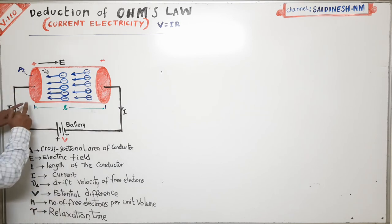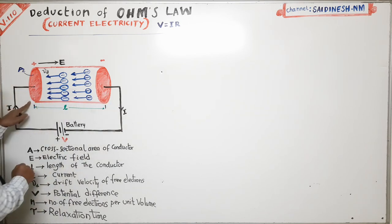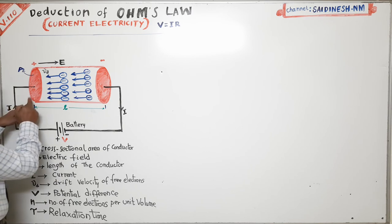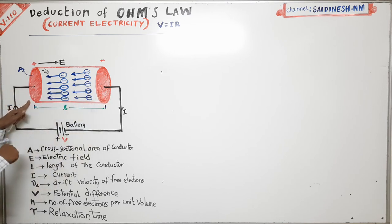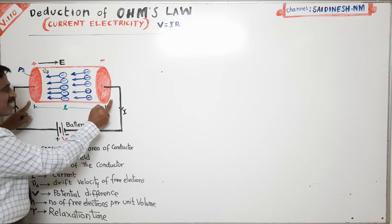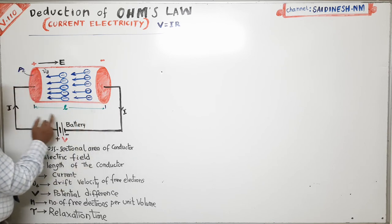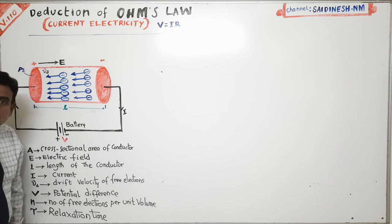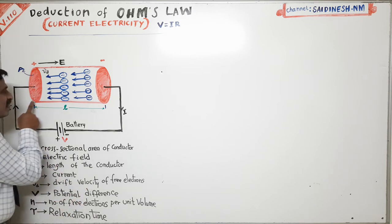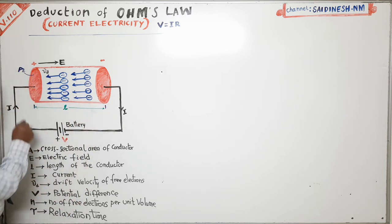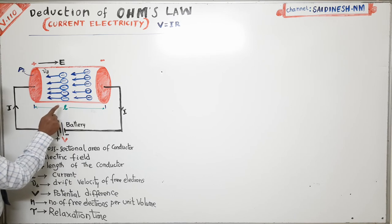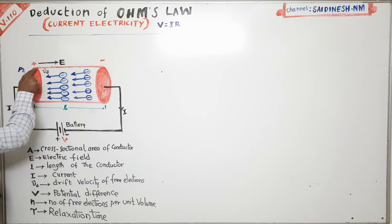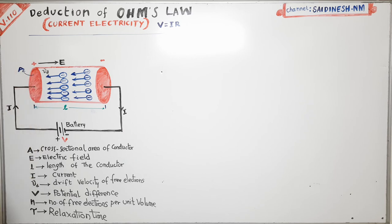Let us consider a metallic wire — a copper wire or a gold wire. Let us consider a conductor of length L. The length of the wire may be 1 meter or 2 meters; I am taking the length of the conductor as L. This is the cross-sectional area of the conductor, represented by the letter A.